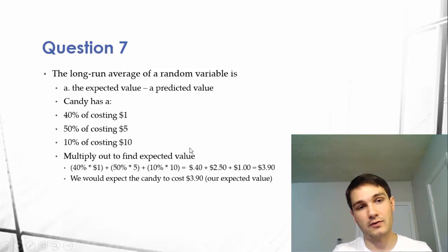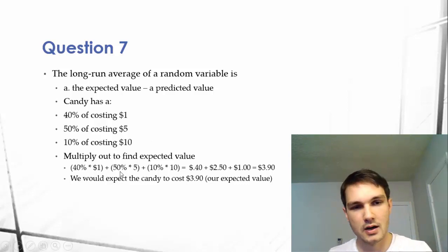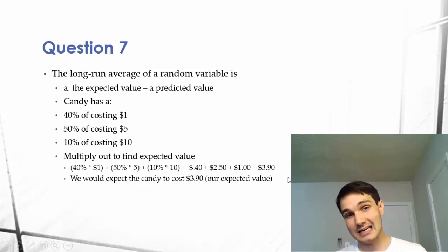So if we take the weighted value of all of these by multiplying it out, 40% times 1, 50% times 5, or 10% times 10, which I do right here, 40% times 1, 50% times 5, and 10% times 10, we can find out what our expected value is for purchasing any candy.